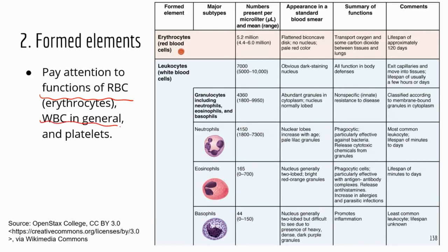Now let's look at erythrocytes, or red blood cells. The main function is to transport oxygen and carbon dioxide between the tissues and lungs. That's an important job because all cells need oxygen and need to get rid of carbon dioxide, so they all rely on red blood cells to do that.